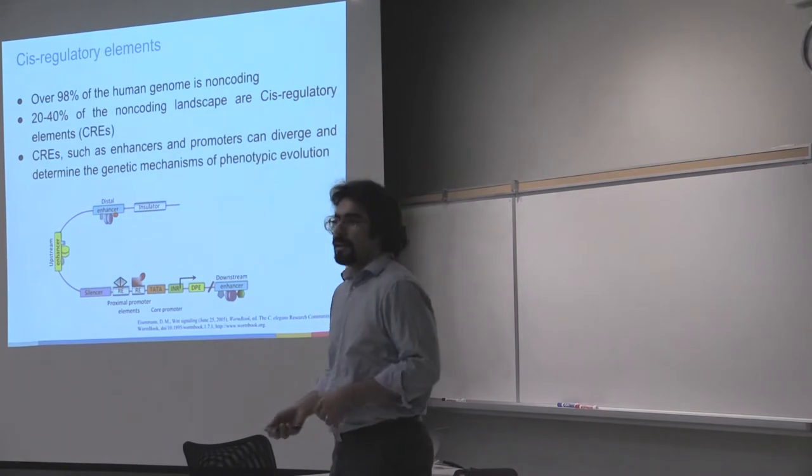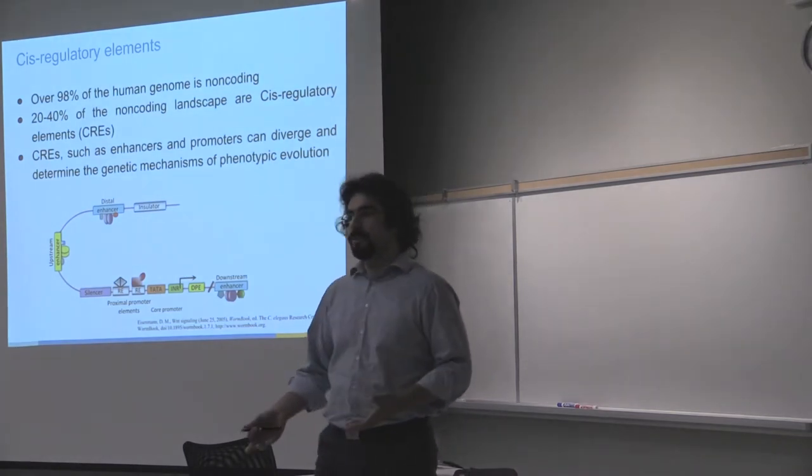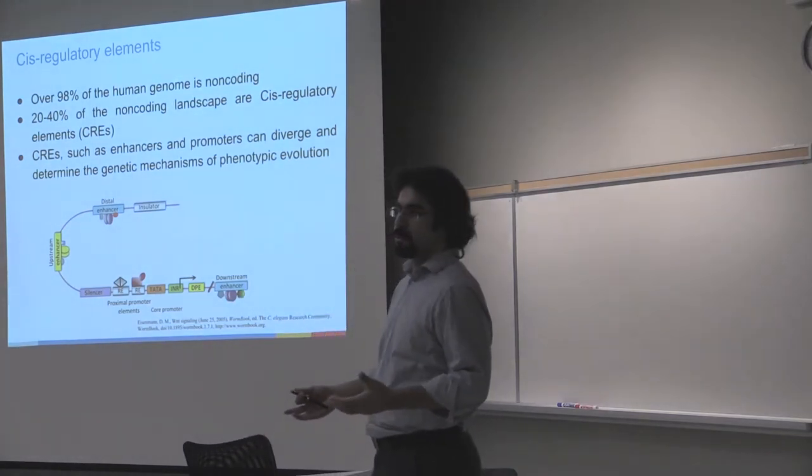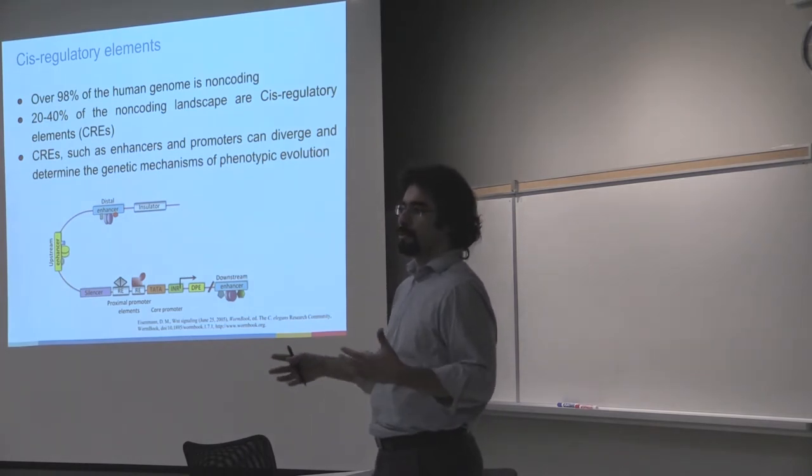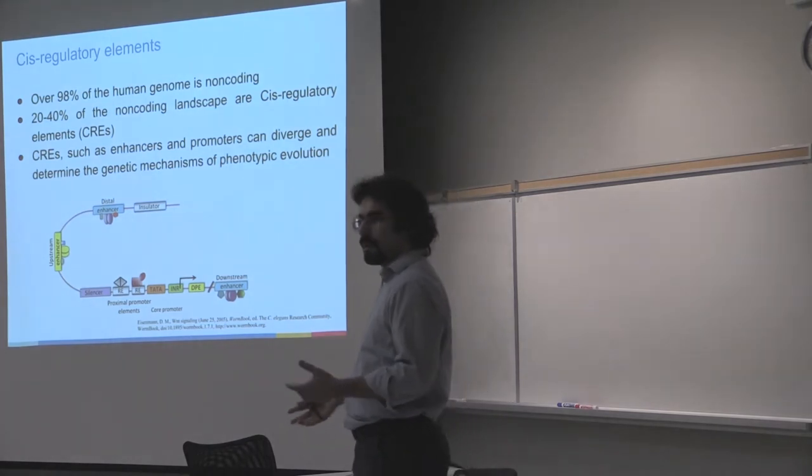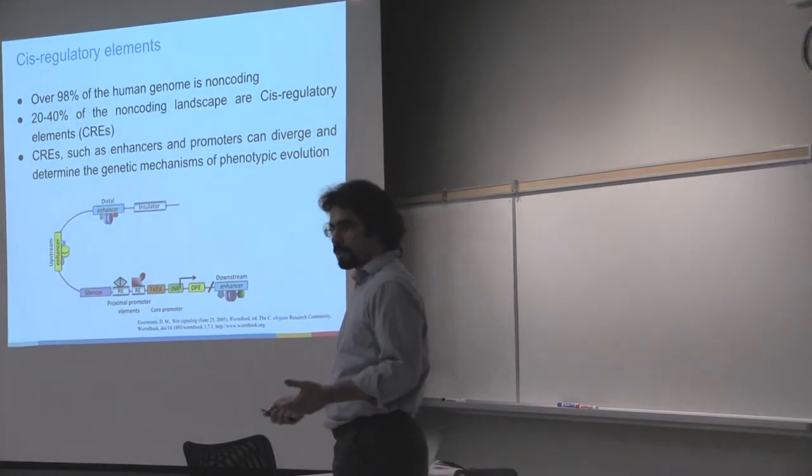We know that more than 98% of the human genome is non-coding, and this non-coding landscape includes more than 20 to 40% cis-regulatory elements. These could be promoters, enhancers, anchors of chromatin interaction, and so on.